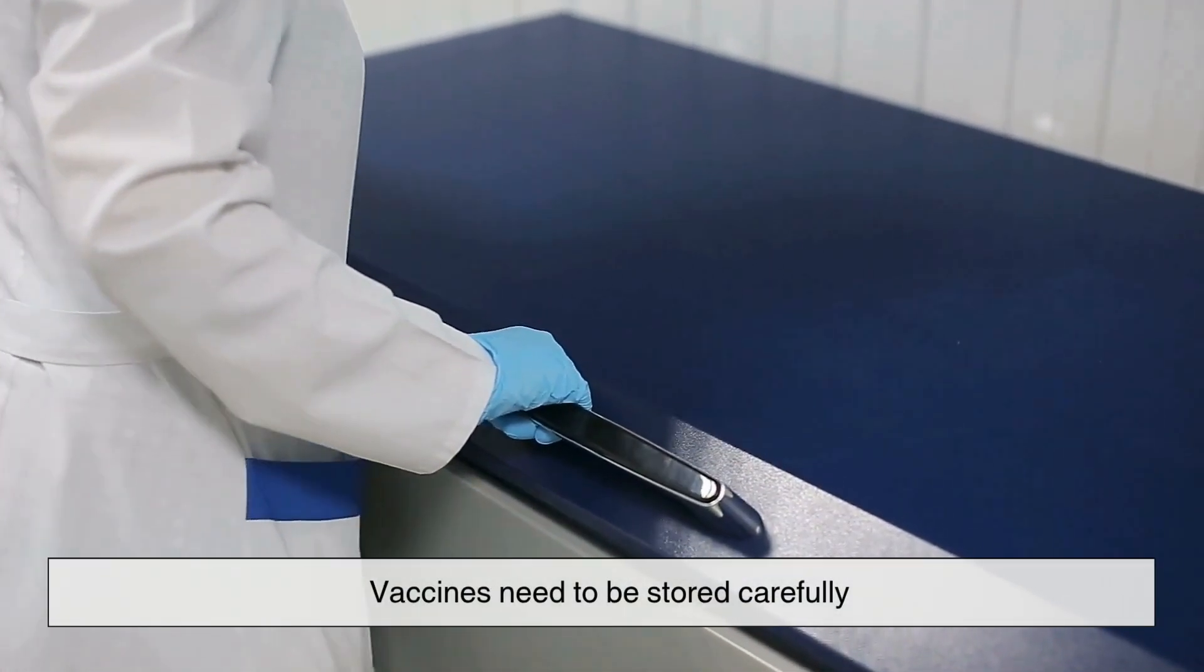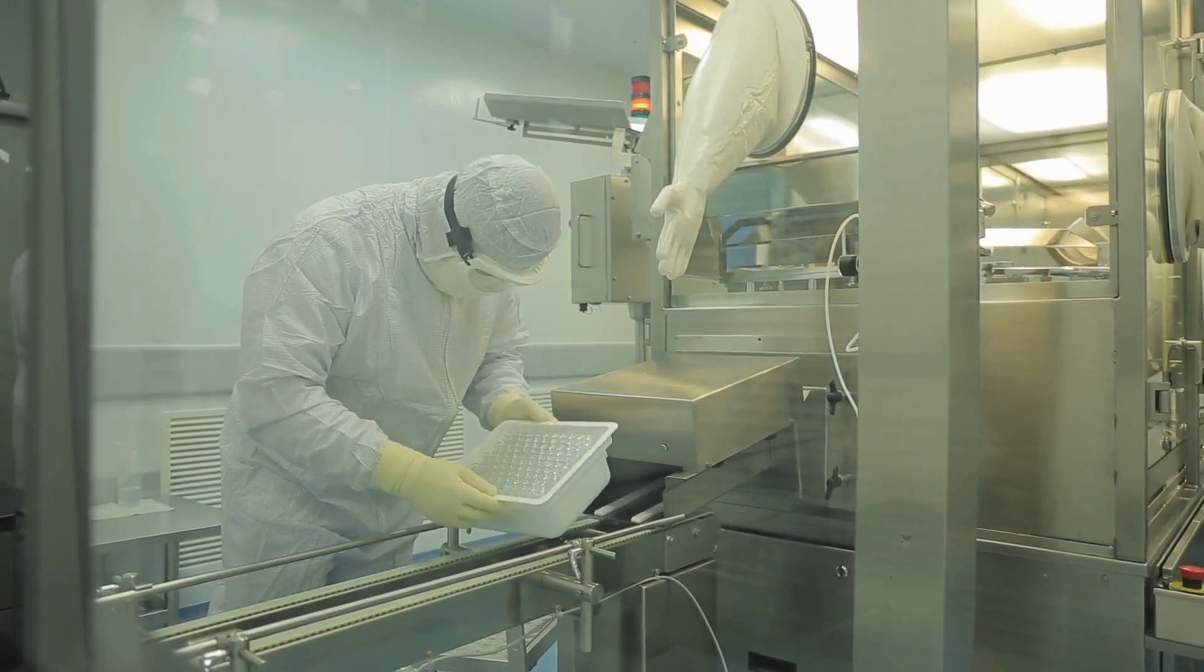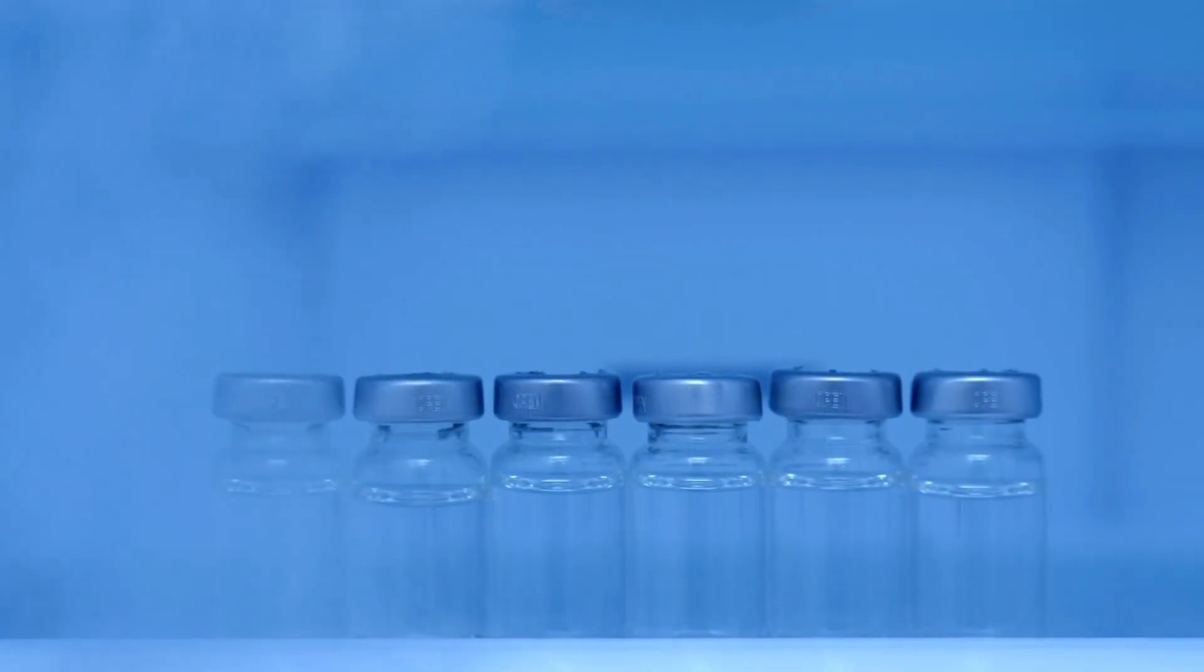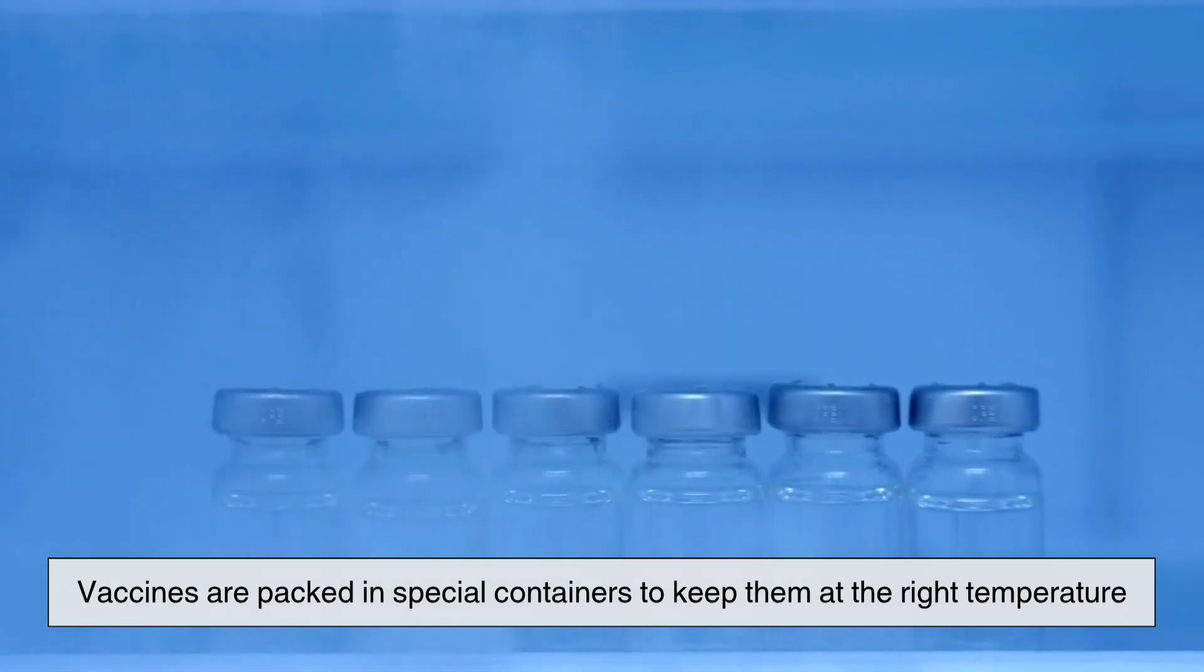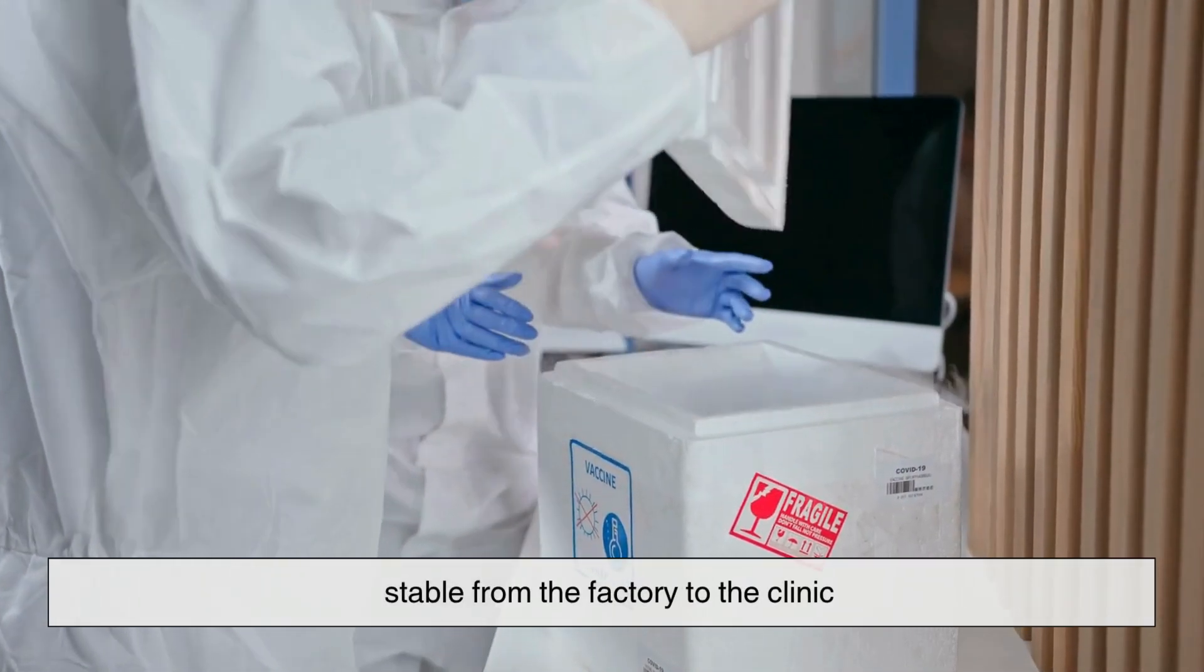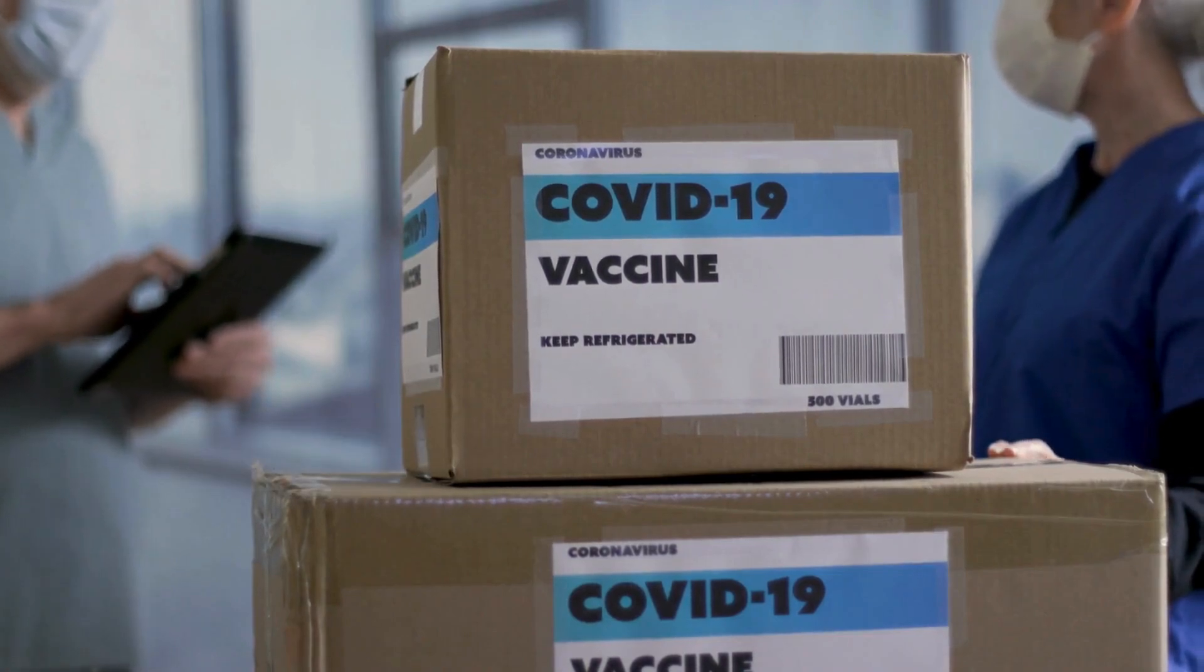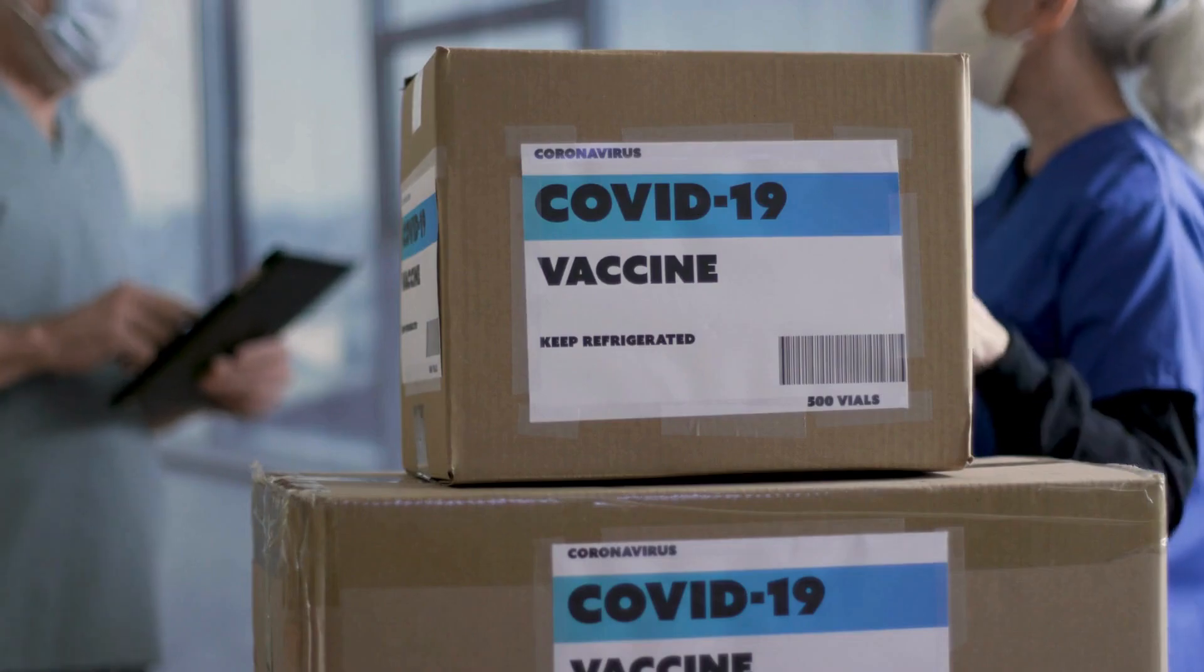Vaccines need to be stored carefully. Some can be kept in regular refrigerators, while others, like some COVID-19 vaccines, need to be kept at very cold temperatures. After passing all tests, vaccines are packed in special containers to keep them at the right temperature. They're tracked during shipping to make sure the temperature stays stable from the factory to the clinic. This is known as the cold chain. It helps prevent the vaccine from going bad before it reaches the people who need it.